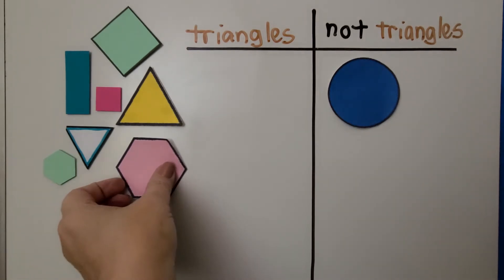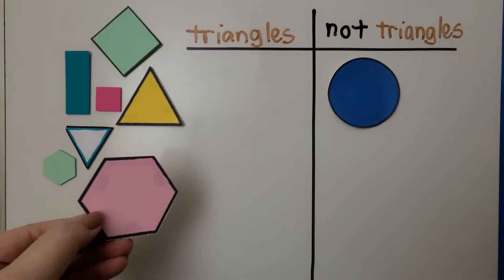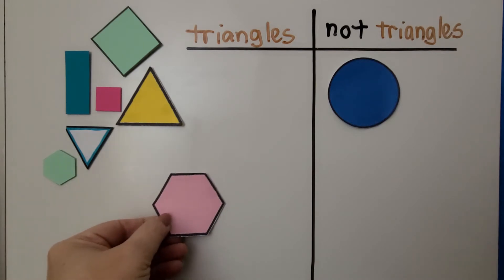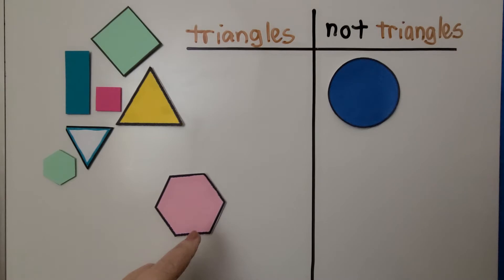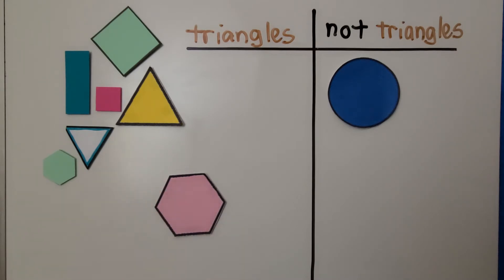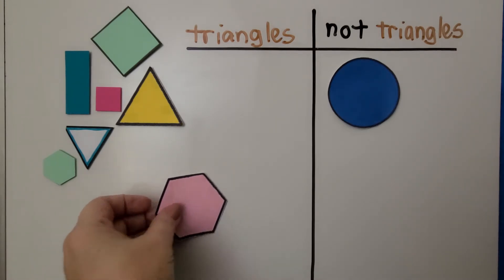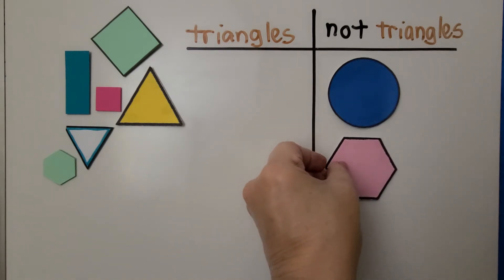Is this a triangle? Does it have three straight sides? This has one, two, three, four, five, six straight sides. That's too many. That's not a triangle. That's actually a hexagon.